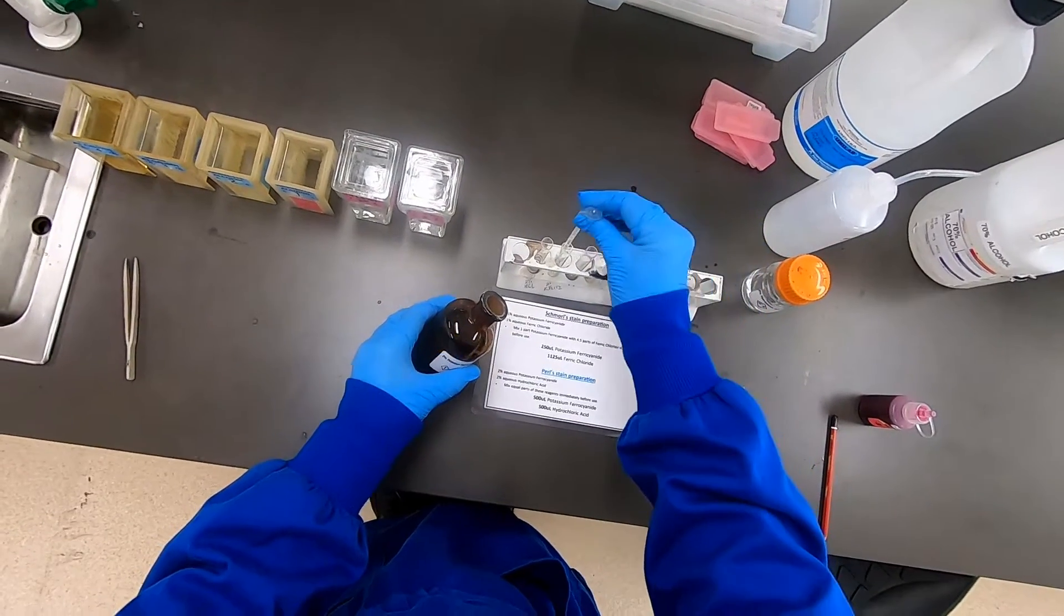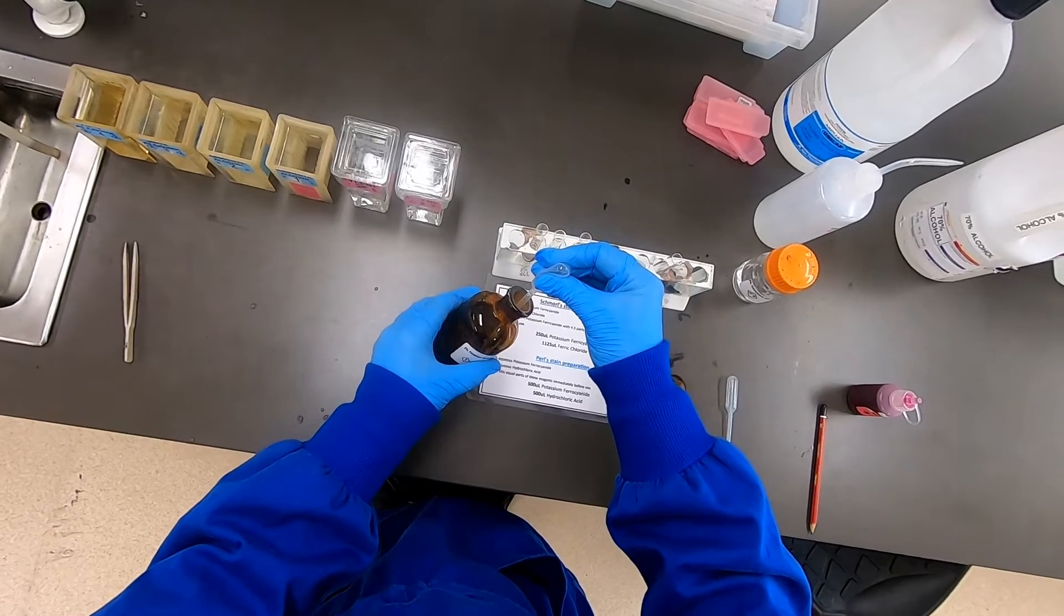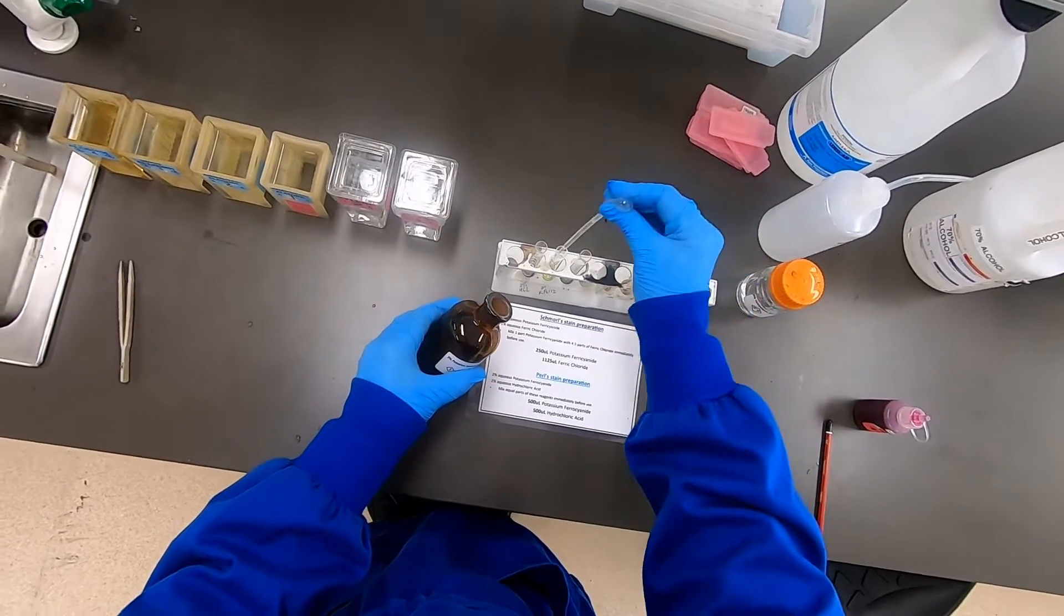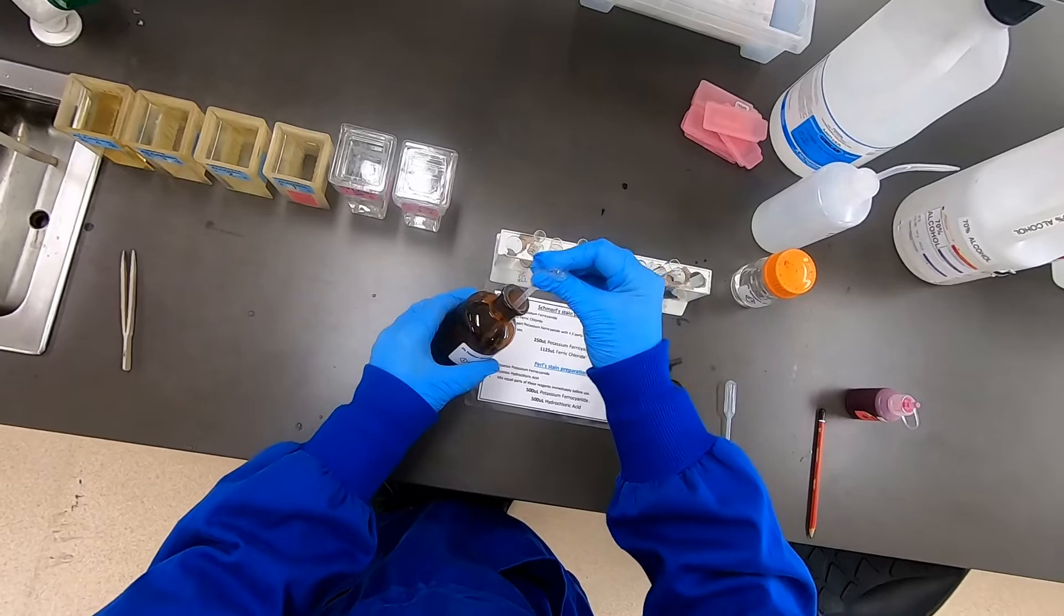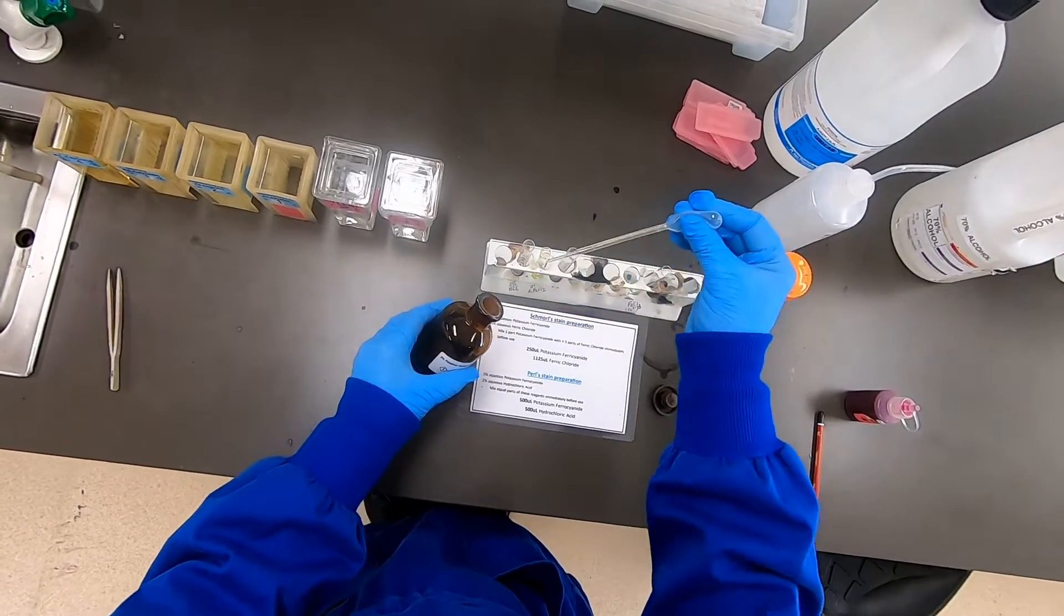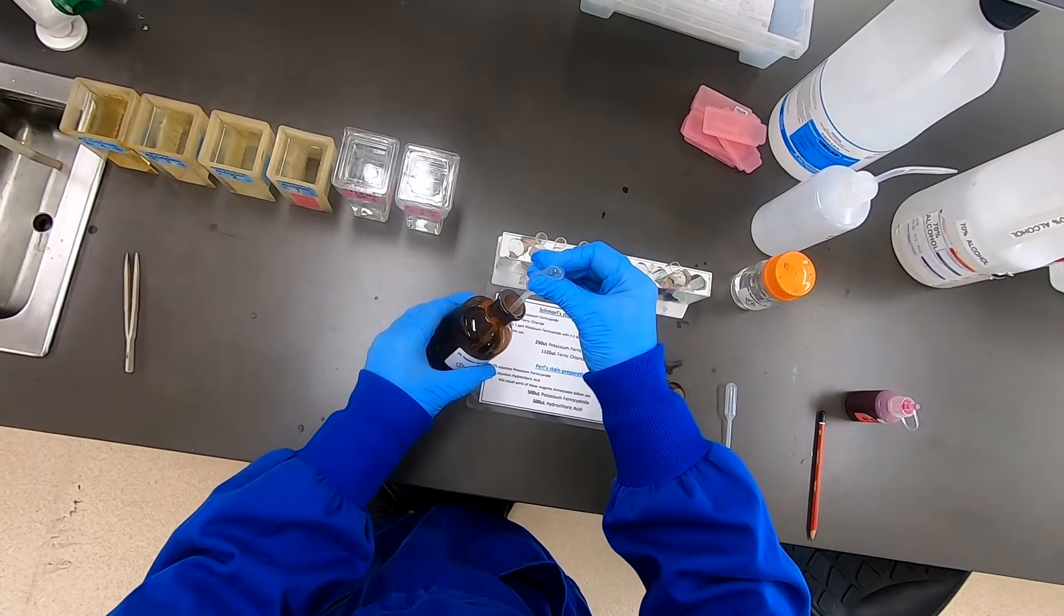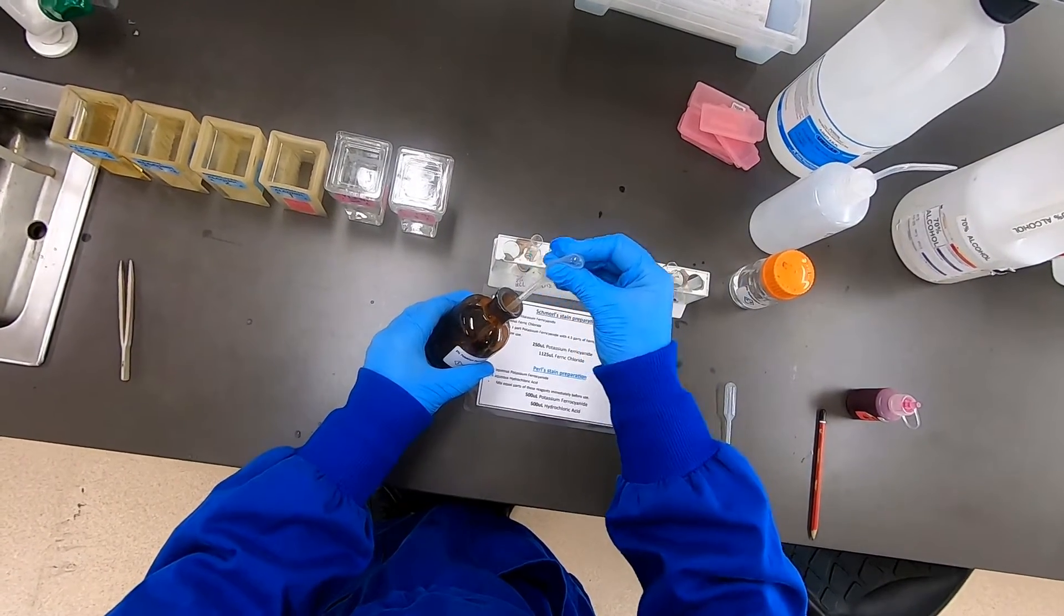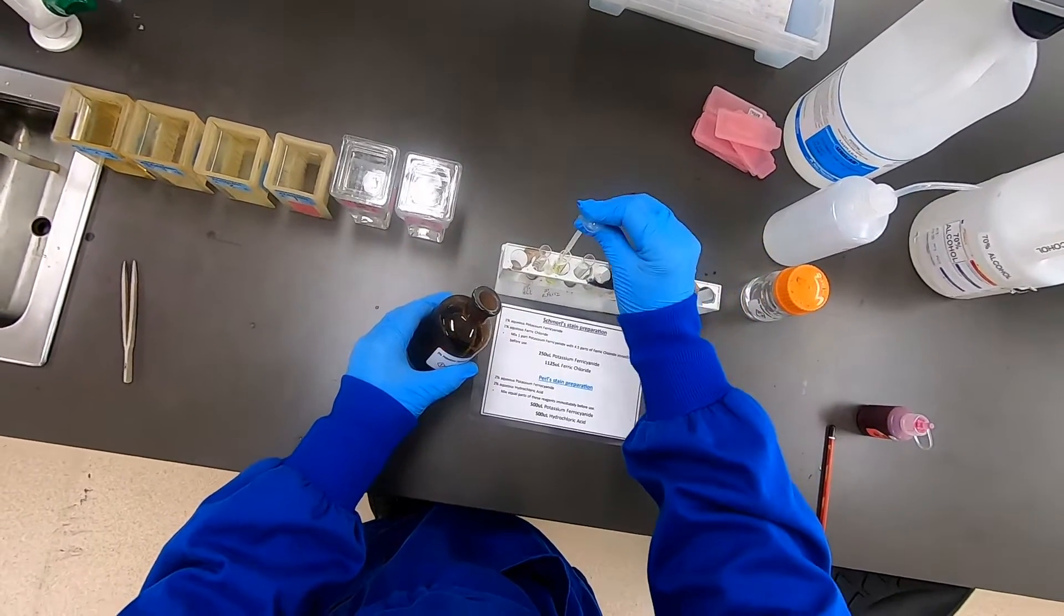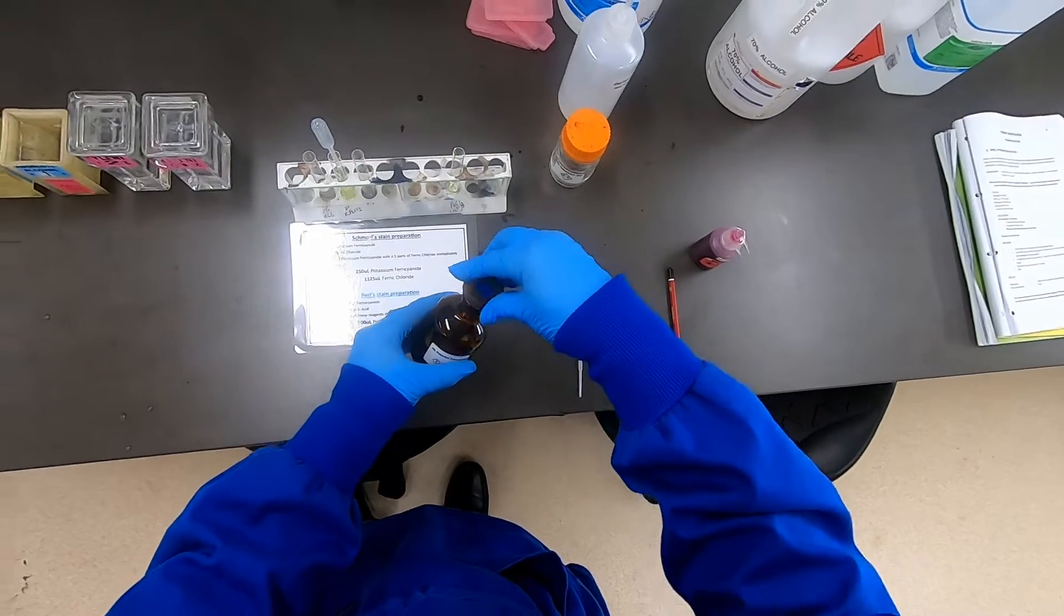Carefully measure out using these transfer pipettes. You can get a reasonably good measure of 1 mL at a time with the markings on these pipettes. So 4 mL of the potassium ferrocyanide.